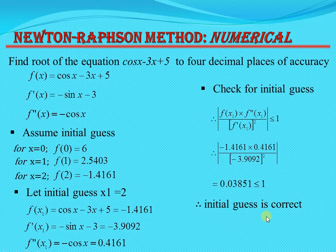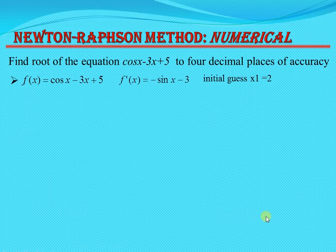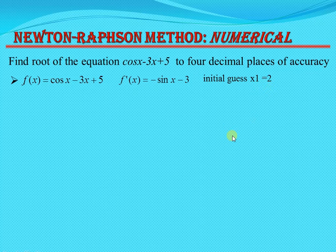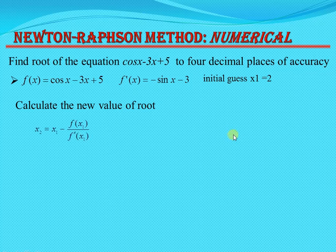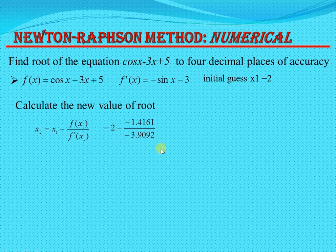Since the initial guess is correct, we find the next approximation using the Newton-Raphson formula: x2 = x1 minus f(x1)/f'(x1). Substituting: x2 = 2 minus (minus 1.4161)/(minus 3.9092) = 1.6377. This is the first approximation.